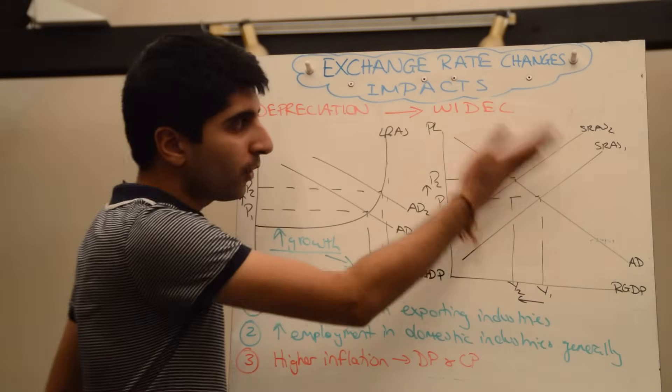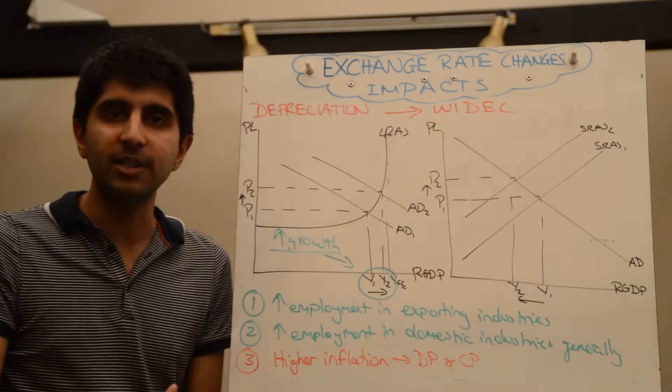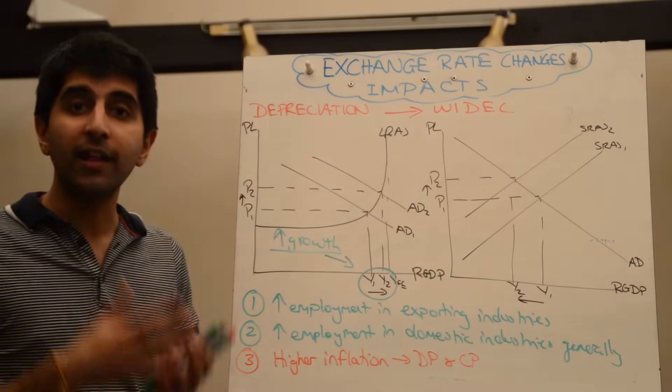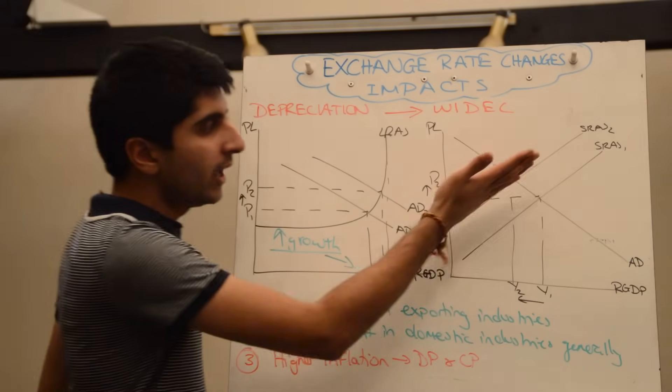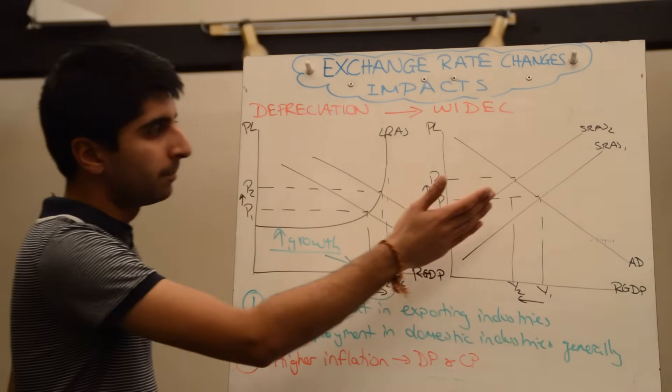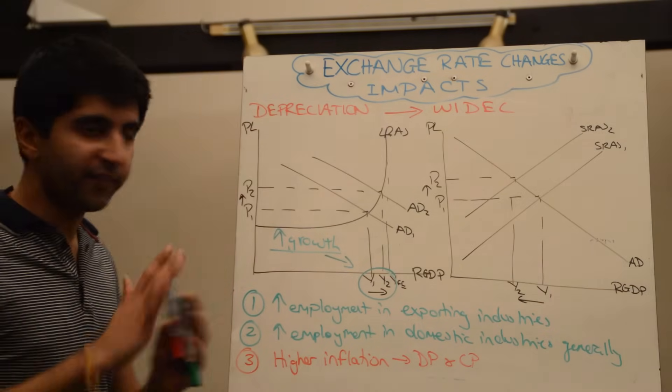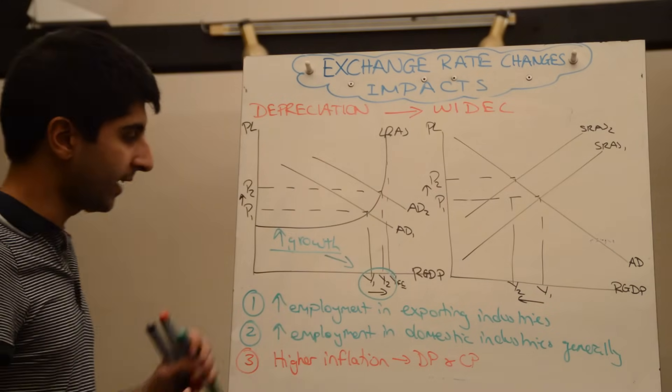But also SRAS may well shift to the left. With more expensive imports, firms that need to import raw materials will see an increase in costs. Those imports become more expensive, increasing the cost of production, shifting SRAS to the left, which could harm the economy as well. So two kind of effects to look at there. Both diagrams are necessary in an exam.